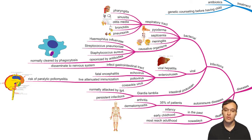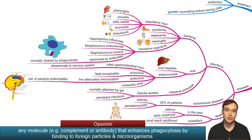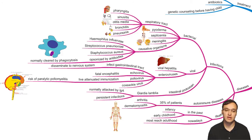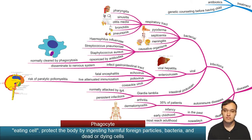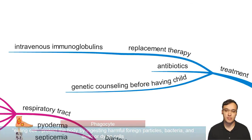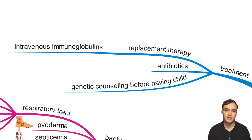The usual causative bacteria include Haemophilus influenzae, Streptococcus pneumoniae, and Staphylococcus aureus. These are normally opsonized by antibodies, but since we don't have any antibodies or immunoglobulins, we cannot opsonize these bacteria, and they are not cleared by phagocytic cells. Treatment is replacement therapy — giving immunoglobulins intravenously — plus antibiotics for infections and genetic counseling, since this is an inherited disease.